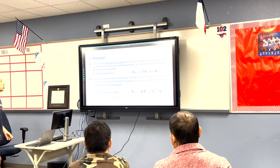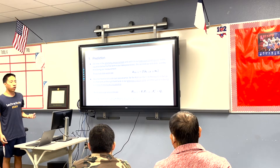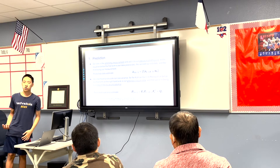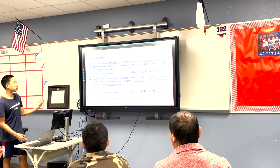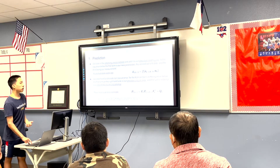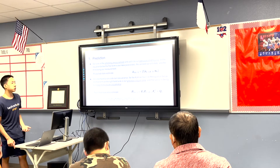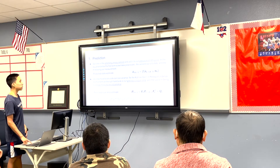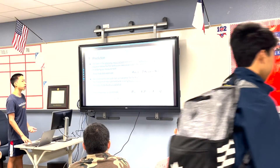Returning to our first step, we again have our previous robot state along with the new measurement and sensor noise, and we use those to compute our estimate. To compute the uncertainty, we take our robot's previous uncertainty level along with the sensor noise and add these two together.